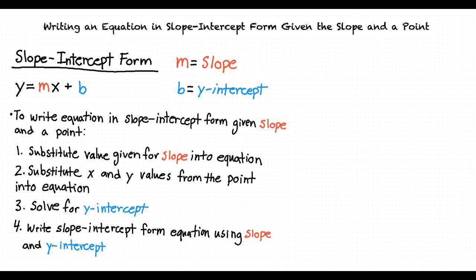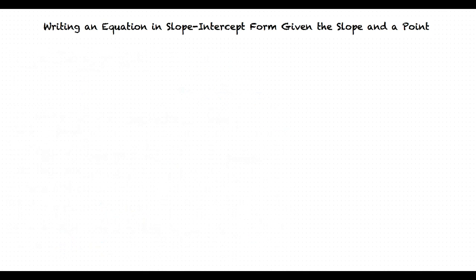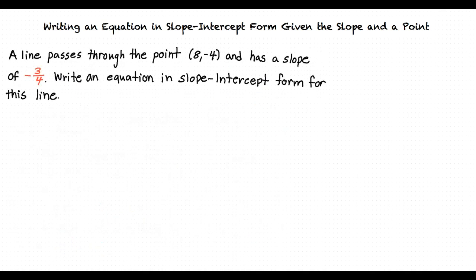Can we try out a problem of this type? Definitely. In this problem, we are asked to write the equation in slope-intercept form for the line that passes through the point (8, -4) and has a slope of negative 3 over 4.